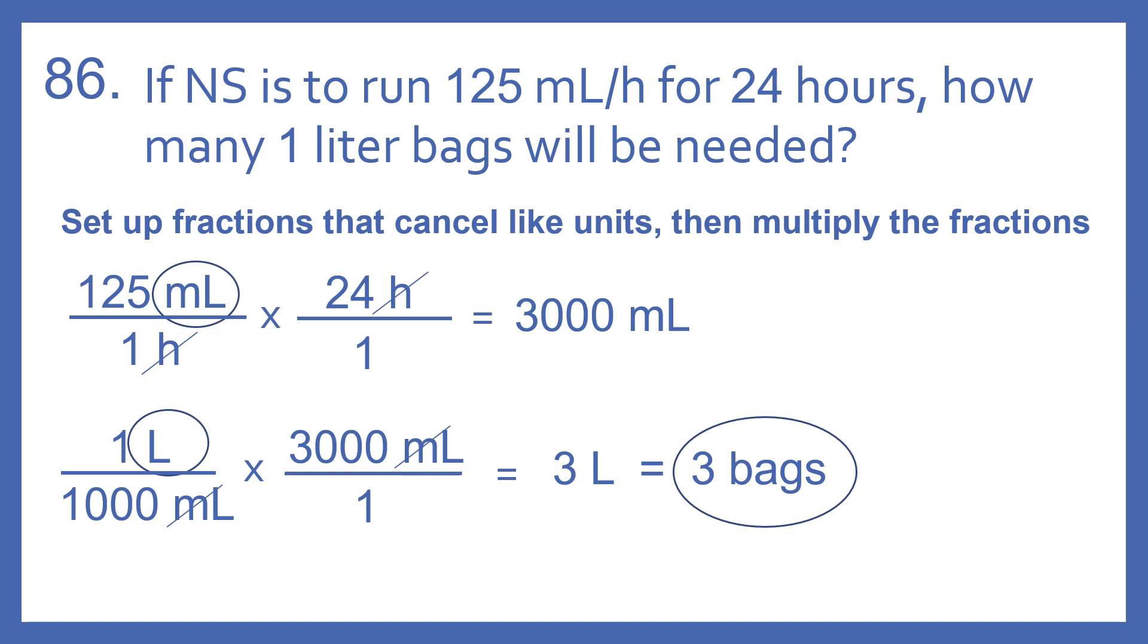So to convert that to liters, 1 liter equals 1,000 milliliters. So 1 liter per 1,000 milliliters times 3,000 milliliters over 1. We have milliliters on the top, milliliters on the bottom. Those cancel. We're left with liters. And 3,000 divided by 1,000 equals 3 liters. So that would be 3 bags.